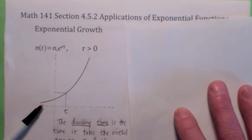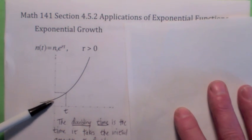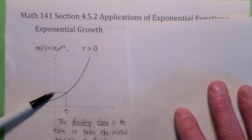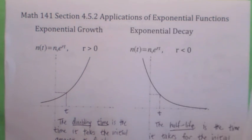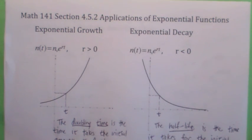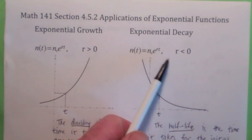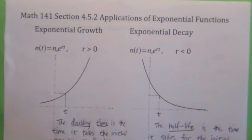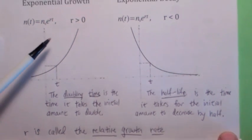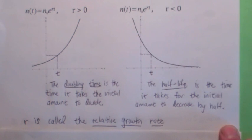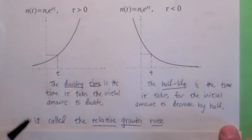An important feature of exponential growth is called the doubling time — if you have an initial amount n-zero, the question is how long does it take to double? When you have a decreasing exponential function, that's exponential decay. In 4.1 that was when the base is between zero and one; with base e, that corresponds to the exponent being less than zero. This constant is called the relative growth rate: if it's positive you have growth, if it's negative you have decay. When they give you the relative growth rate on the homework, the problem becomes very easy.